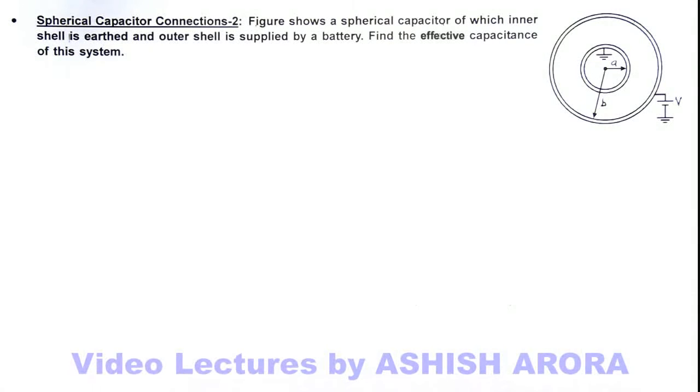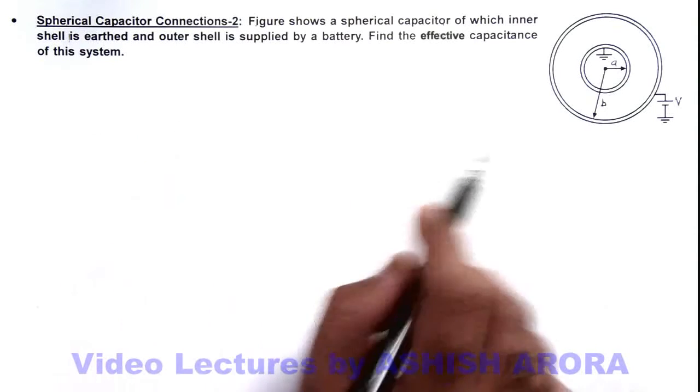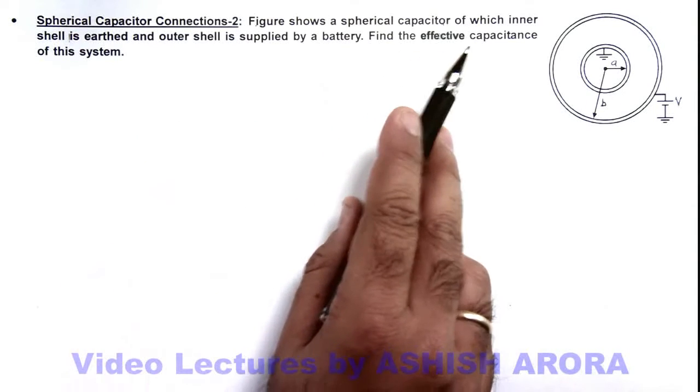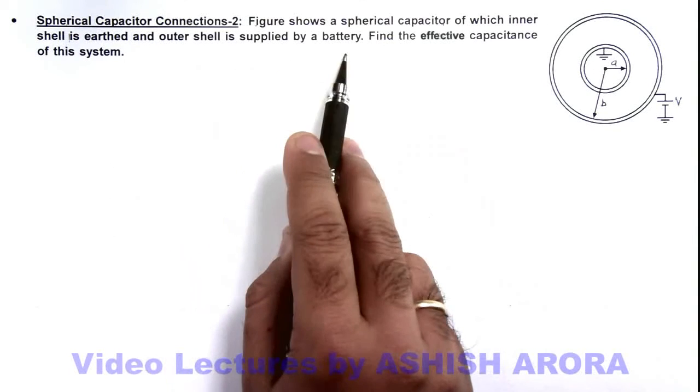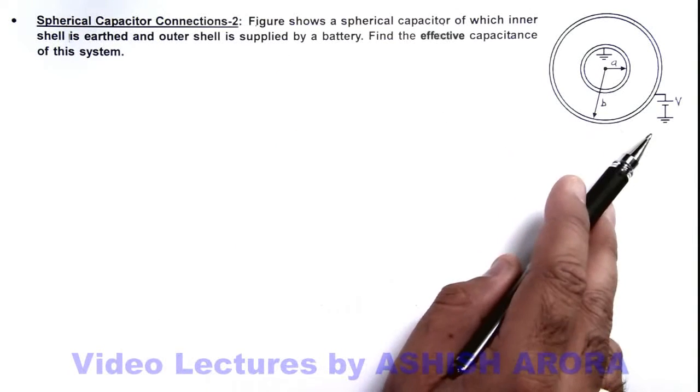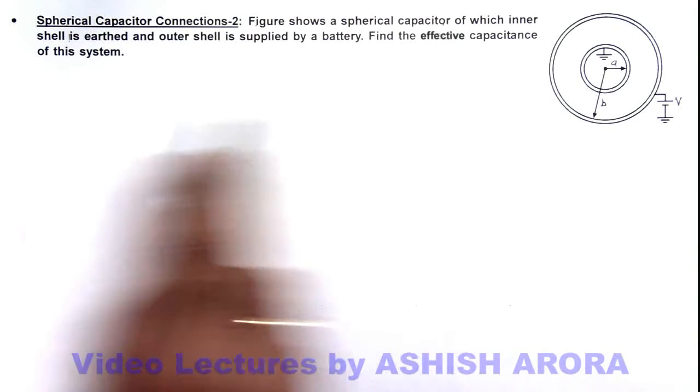In this illustration we'll see another connection of a spherical capacitor. Here, the figure shows a spherical capacitor of which inner shell is earthed and outer shell is supplied charges by a battery. We are required to find the effective capacitance of the system.